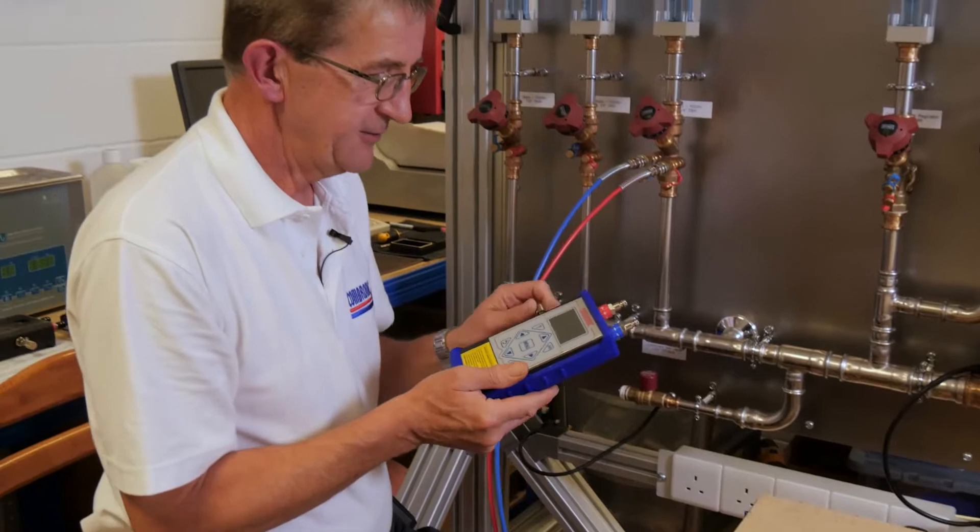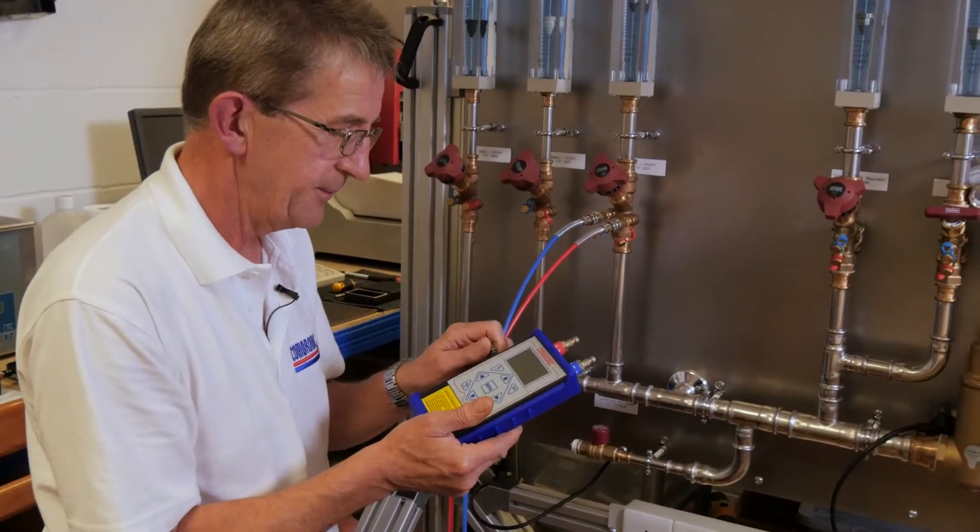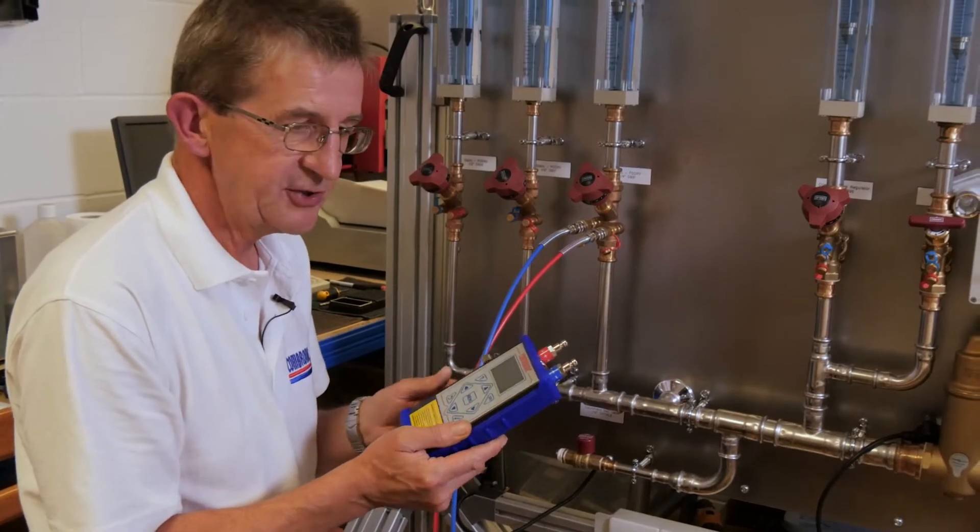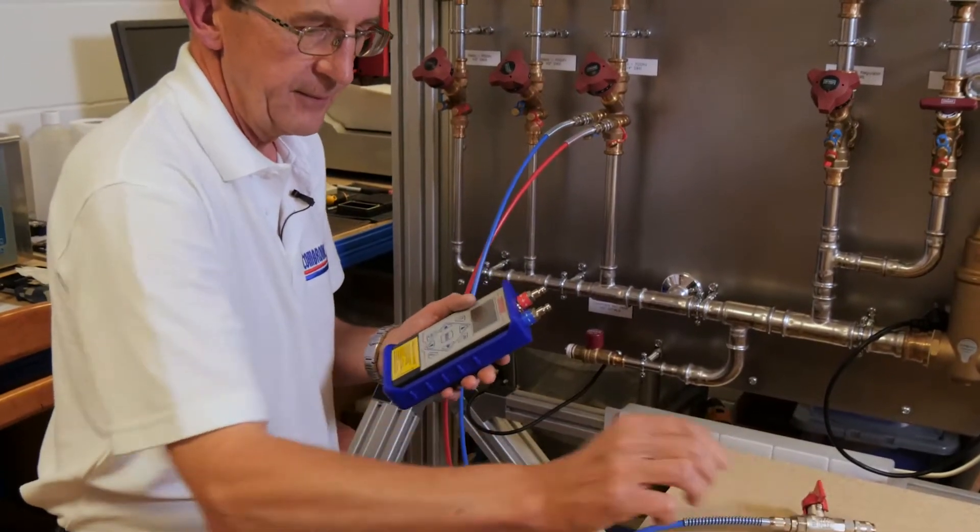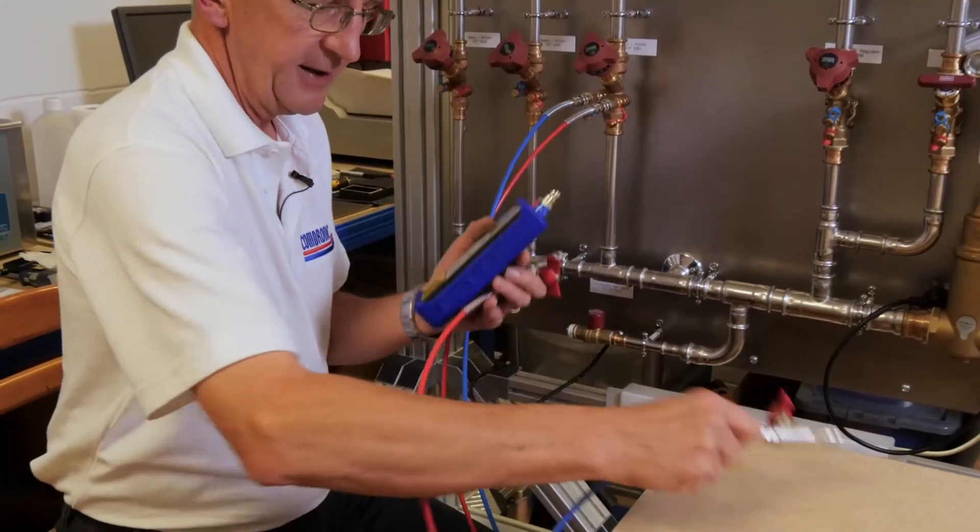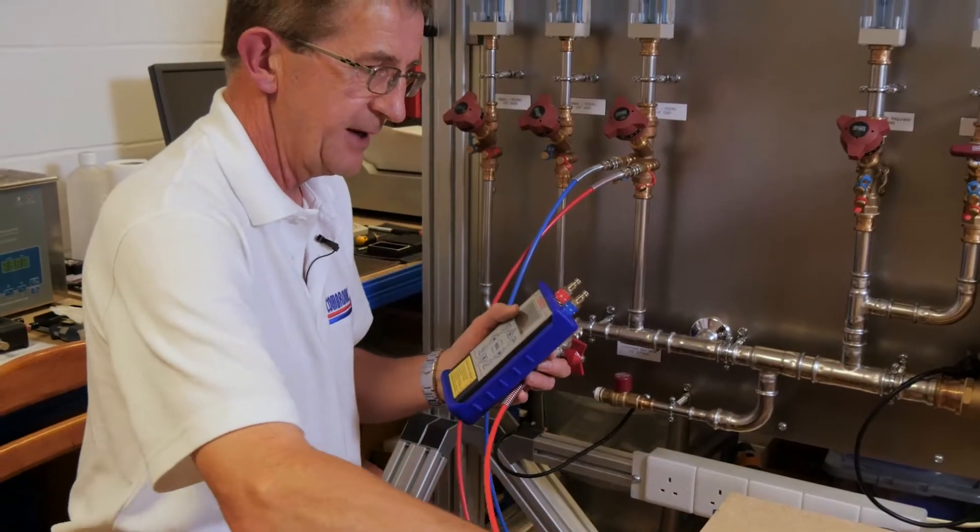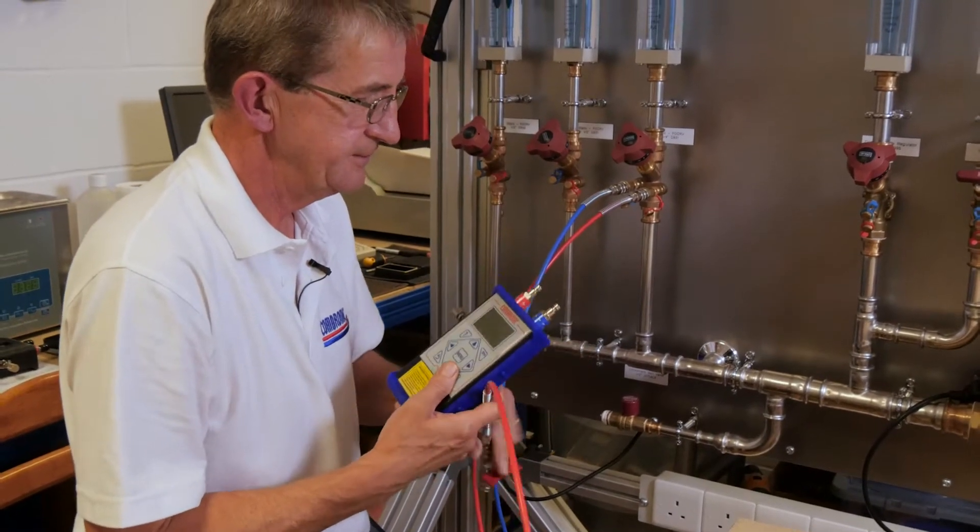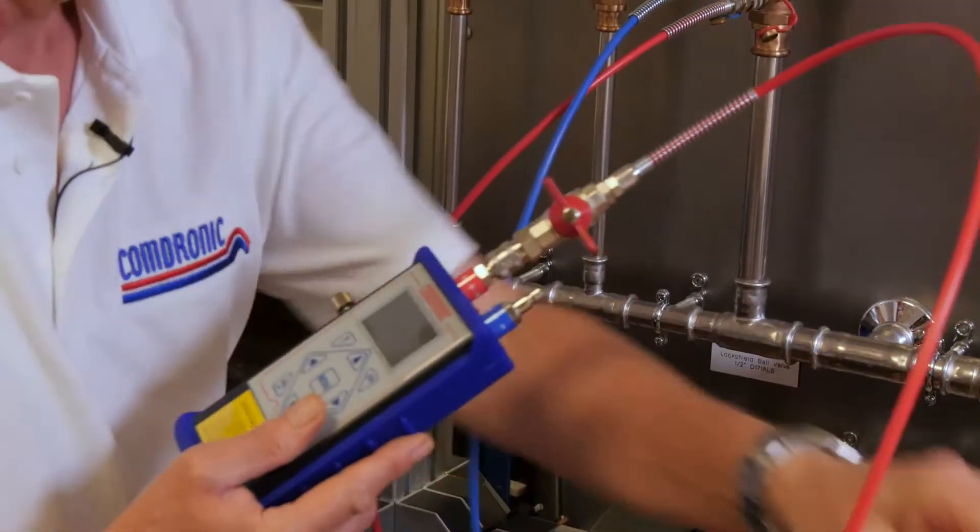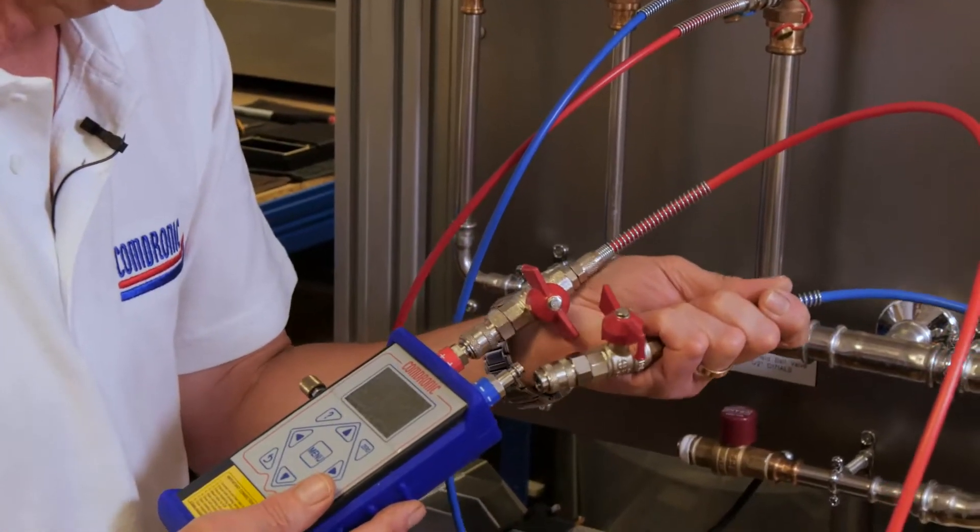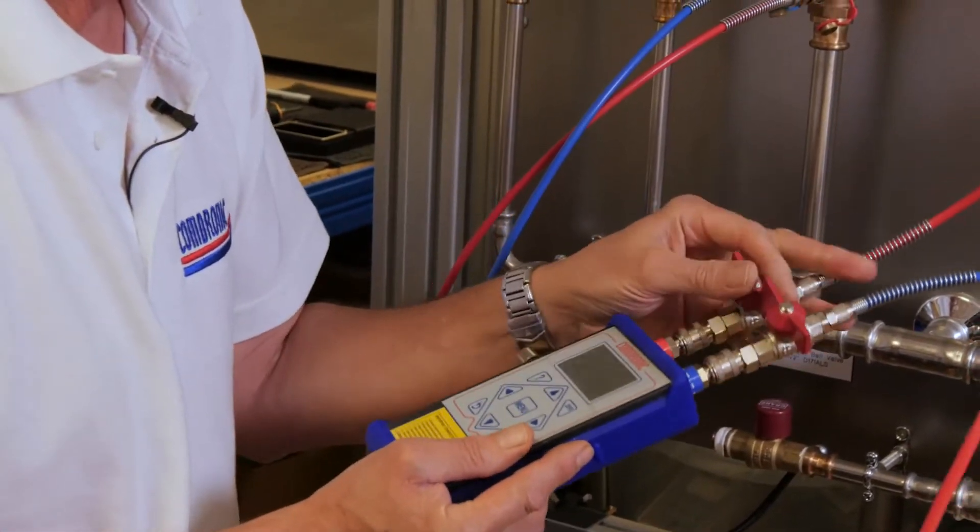Take the AC6 and first of all make sure that the equalizing valve on the side is fully open. And we're now going to attach the tubes to the AC6. So if we take the red hose first and connect it to the high pressure port, and then the blue hose and connect it to the low pressure port. And we're ready to go.